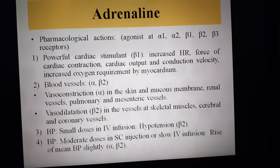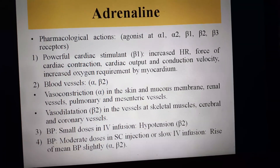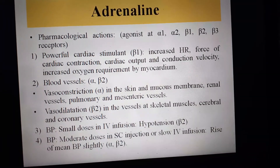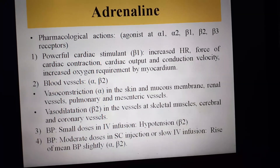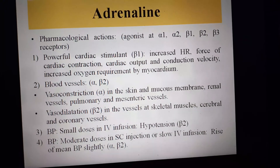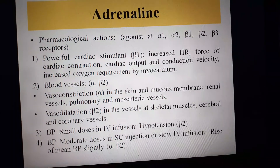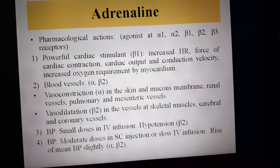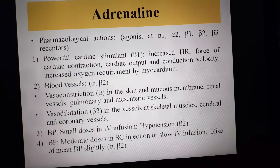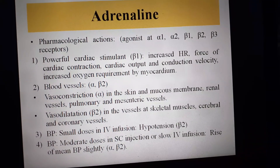Blood vessels have both alpha and beta receptors. Alpha receptors mediate vasoconstriction, while beta-2 receptors mediate vasodilation. Adrenaline causes vasoconstriction in the skin, mucous membrane, renal vessels, pulmonary, and mesenteric blood vessels due to alpha action. It causes vasodilation via beta-2 action at skeletal muscle blood vessels, cerebral, and coronary vessels.